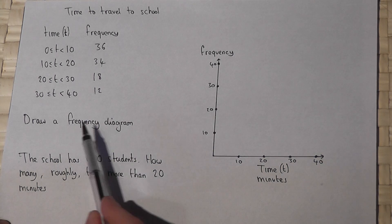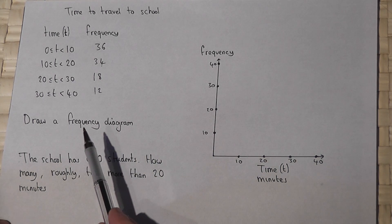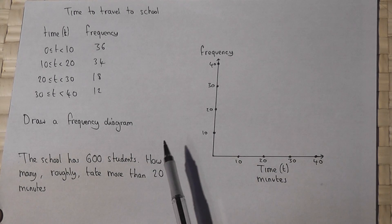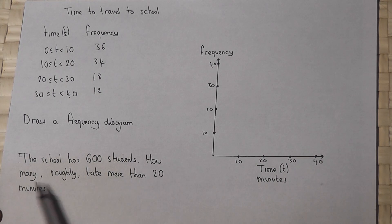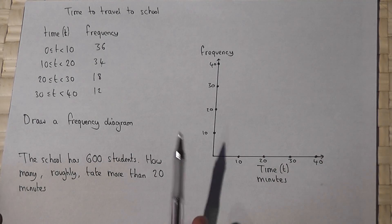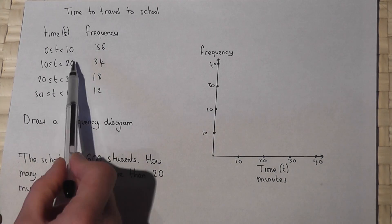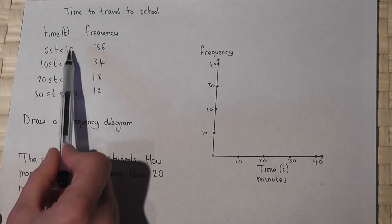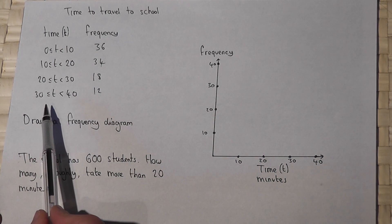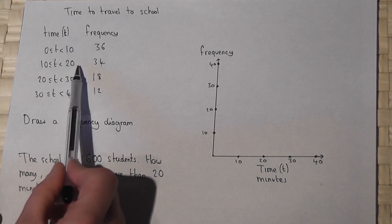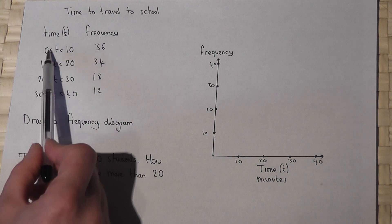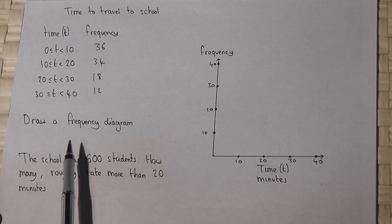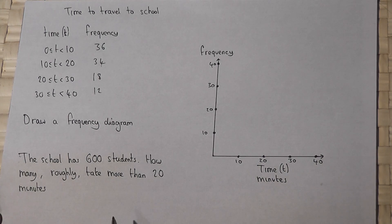This video reviews frequency diagrams and how to construct them, though bear in mind that normally you'd use graph paper. This video is here to give you an idea of how to construct them and then to answer a question linked to the data. This data is continuous — time is measured rather than counted — and when you've got grouped continuous data with a regular, equally-sized class interval, in this case 10 each time, we represent it using a frequency diagram.